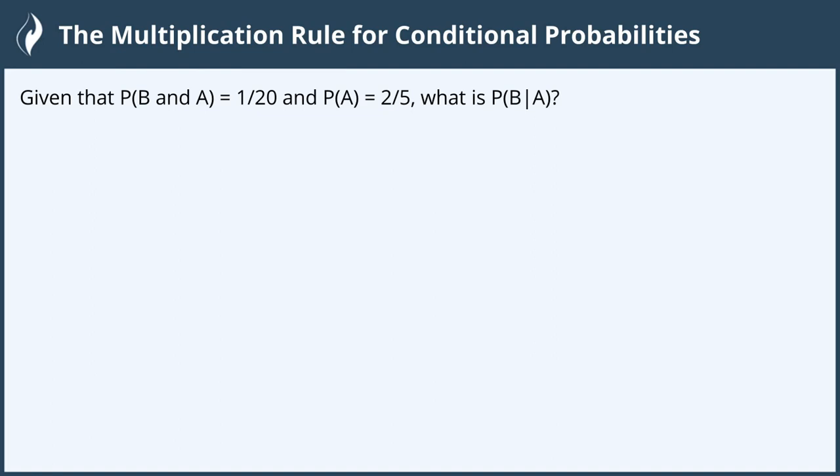Hi everyone! In this video we will use the multiplication rule for conditional probabilities. Given that the probability of B and A is 1/20 and the probability of A is 2/5, what is the probability of B given A?